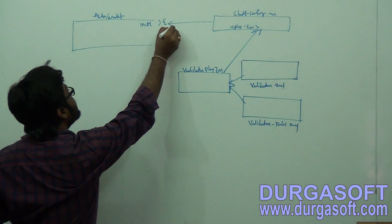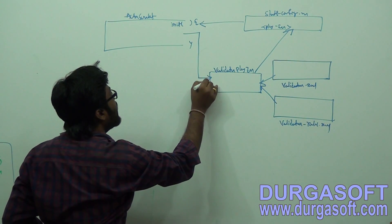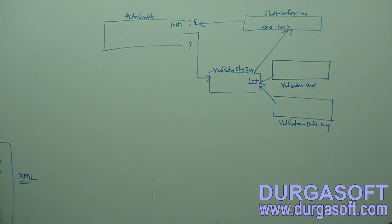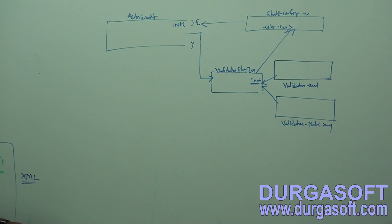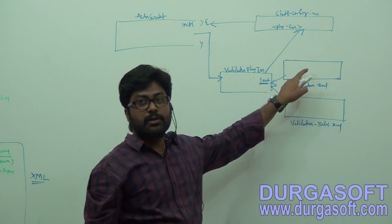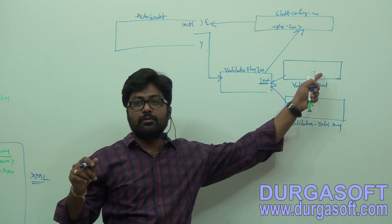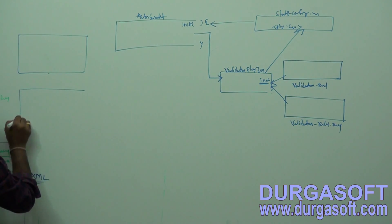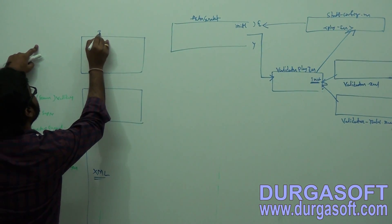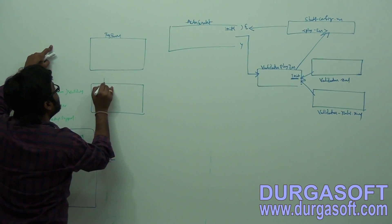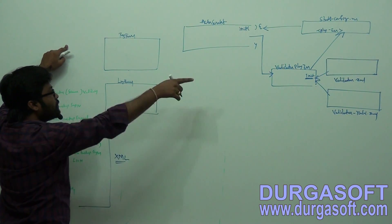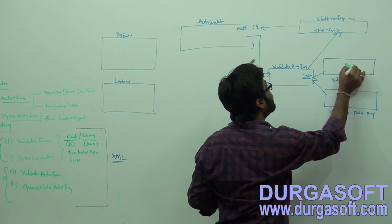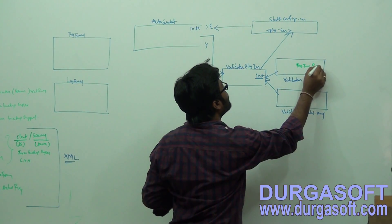At deployment time, the Tomcat container creates the ActionServlet object and executes its init method, which reads strutsconfig.xml. In strutsconfig.xml there is a plugin tag where you configure your ValidatorPlugin class. When the ActionServlet init method runs, it creates the ValidatorPlugin object and executes its init method, which reads your validation XML files.